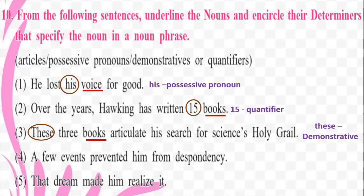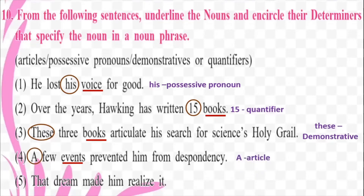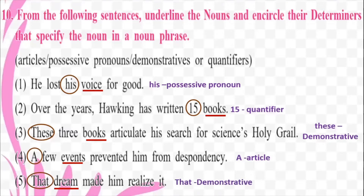Next: 'A few events prevented him from despondency.' The noun here is 'events' — how many events? A few events. So we can take 'few' here, but since we've already done quantifiers, we go with 'a', which is the indefinite article — 'a few events', meaning we don't know exactly which ones. The next one: 'That dream made him realize it.' The noun is 'dream'. Which dream? 'That dream' — so 'that' is the demonstrative determiner.